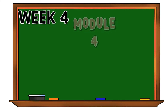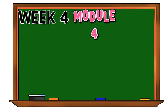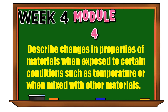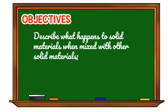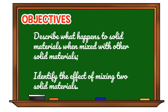Hi class! For today's lesson, we are going to discuss Module 4: Describe Changes in Properties of Materials When Exposed to Certain Conditions Such as Temperature or When Mixed with Other Materials. Our objectives for this lesson: you are expected to describe what happens to solid materials when mixed with other solid materials, and identify the effect of mixing two solid materials.